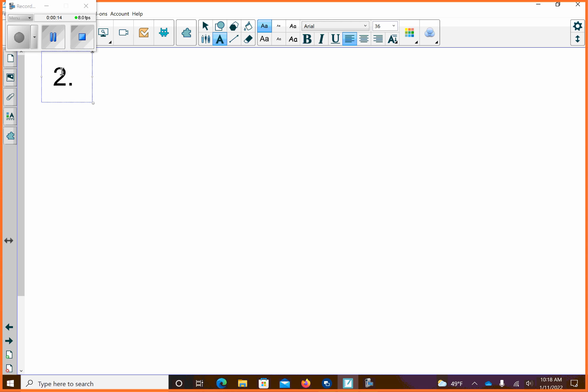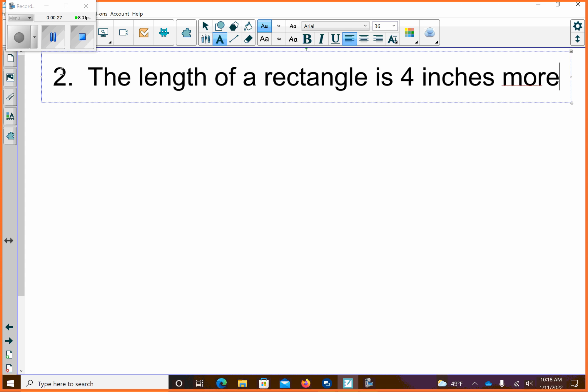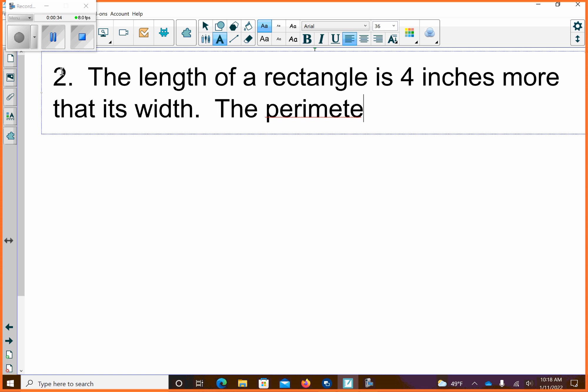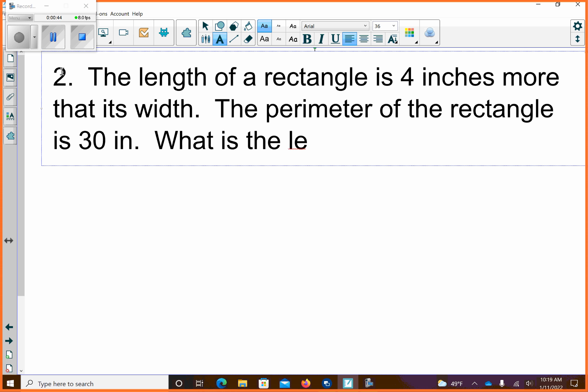All right, so problem number two from the homework. The length of a rectangle is four inches more than its width. The perimeter of the rectangle is 30 inches. What is the length? Okay, did I spell it? Am I typing right? Probably not. You know me too well.